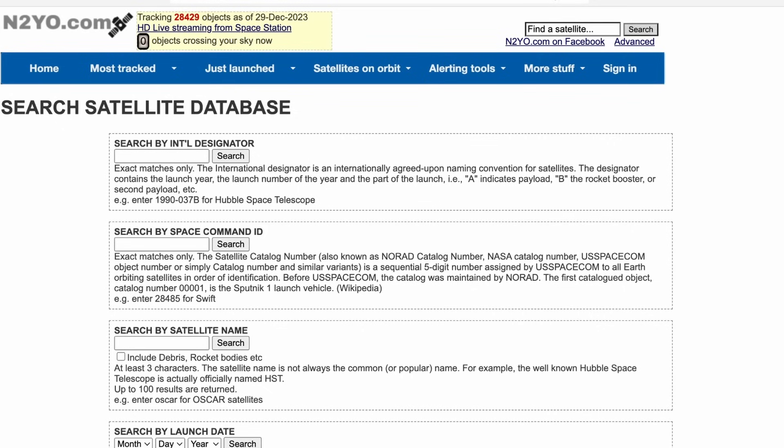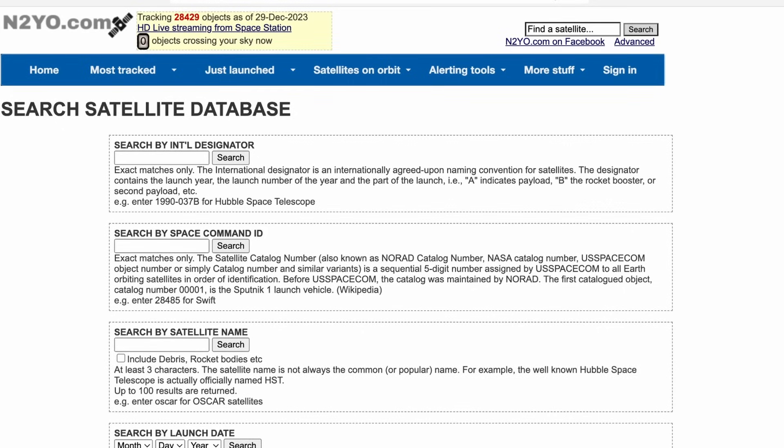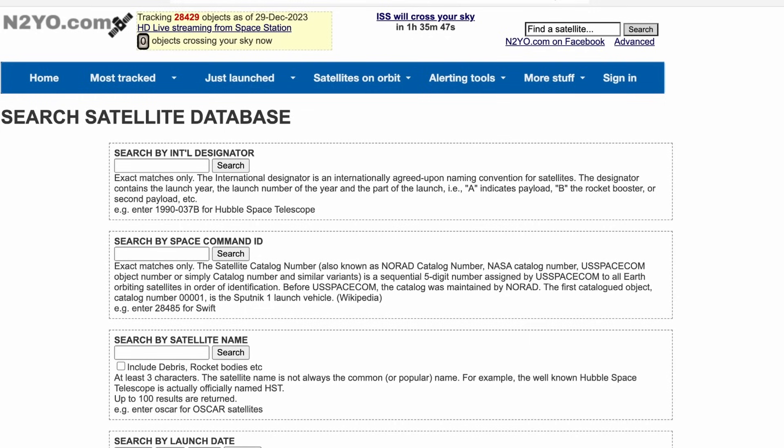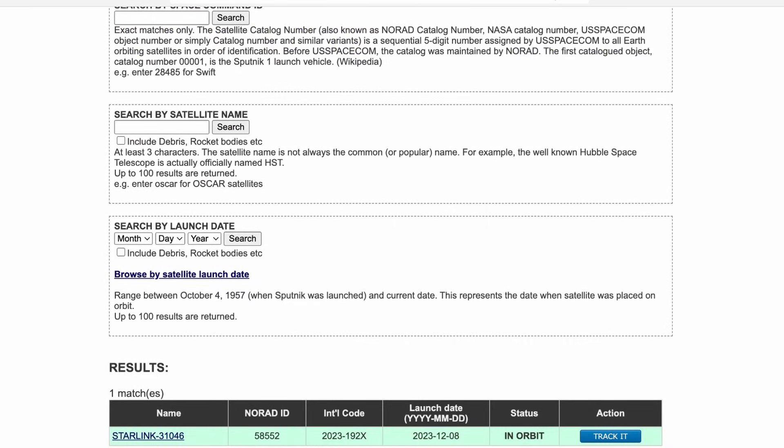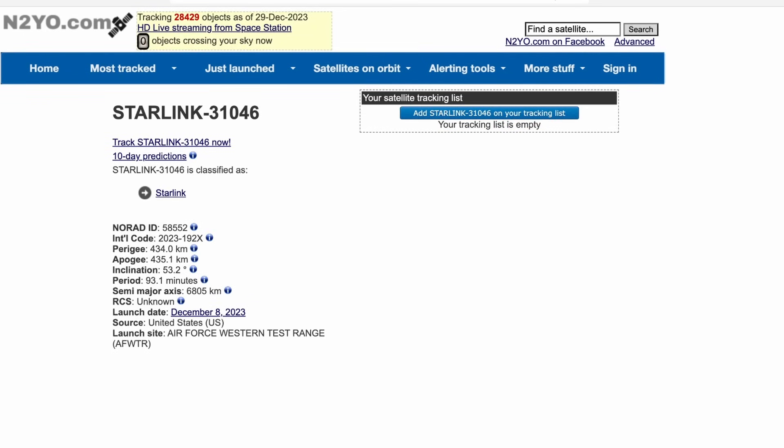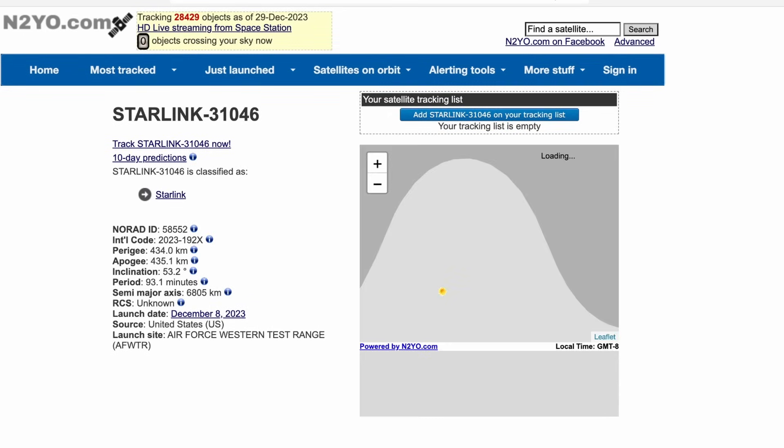Under this input, you can put in the name of the satellite you are looking for, or the international designator of the satellite. Since I already know the international designator of the Starlink satellite, I could just input that here in this input box. So I know it's 2023-192X, and I can click Search. Here I get it as an output, and when I click on the satellite, I get general information about the satellite.